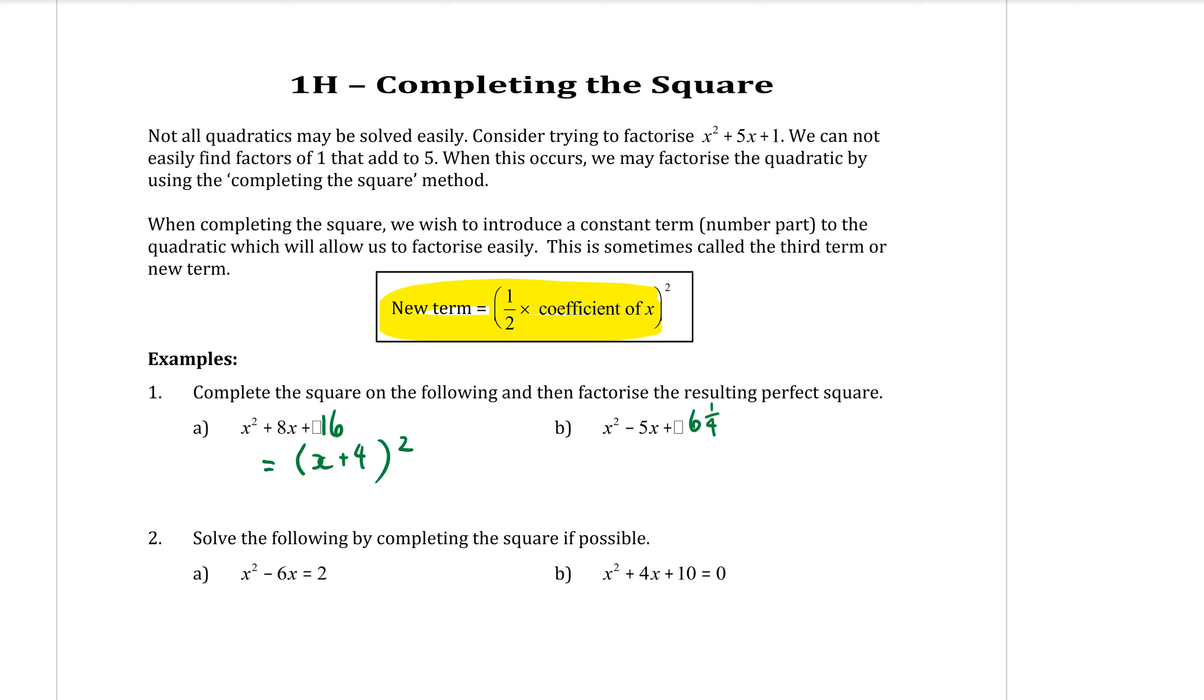So it should be 6.25 or 6 and a quarter. I don't really like decimals. We don't like decimals when we're doing algebra-based things. Then to factorize that into a perfect square, we know we're going to have one bracket with a square on it. The x is going to be at the front, and this number here is going to be half of that number there, so minus 2.5. That's just a quick little practice, finding the number that you need and then factorizing it into a perfect square.